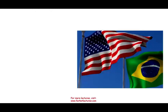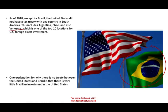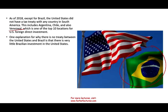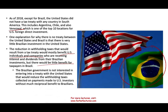As of 2018, as far as South America, except for Brazil, that's the only country we don't have a tax treaty with. All the other countries — including, believe it or not, Venezuela — we have a treaty with. One explanation why the U.S. doesn't have a treaty with Brazil is there is little Brazilian investment in the U.S., so the Brazilian government has no incentive. If anything, the U.S. invests in Brazil, and Brazil wants to keep more money in-country, so it's the opposite. The reduction in withholding taxes from a treaty would mostly benefit U.S. individuals and companies receiving interest and dividends from their Brazilian investments — therefore, the Brazilians have little incentive.